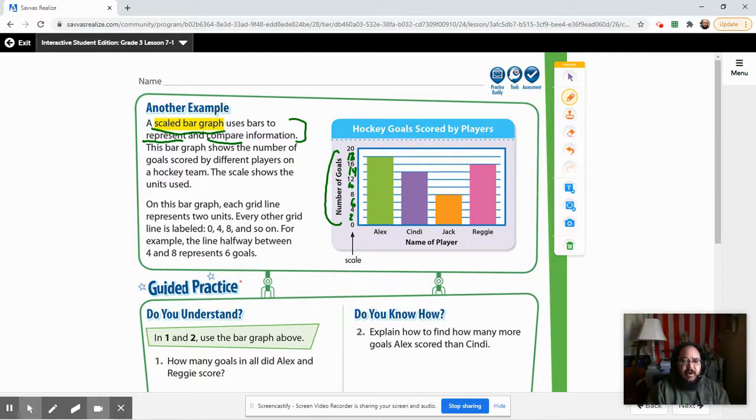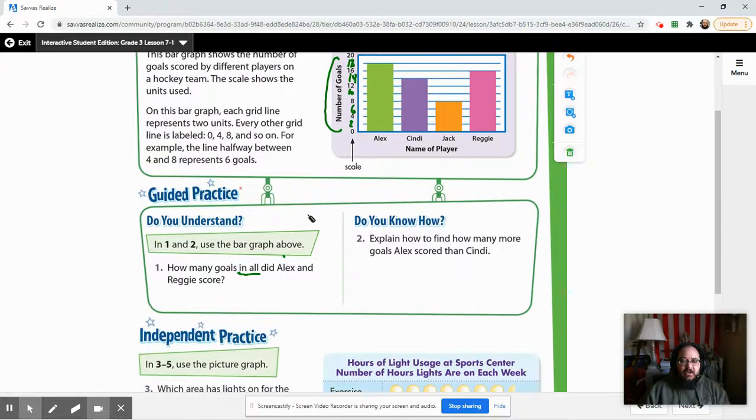So on this bar graph, we are going to look at the different players here. I'm going to try to answer the questions down here. How many goals in all, now look at the wording, how many goals in all did Alex and Reggie score? Now, the clue there is that we're looking at the words in all, which means they want the sum. They want us to add up Alex's and Reggie's scores. Well, Alex, if you look up here, had 18 goals, okay? 18, so we're going to do 18 plus. Reggie, if you look over here, look over at this side right here, had 16, okay? So 18 plus 16 is 34.